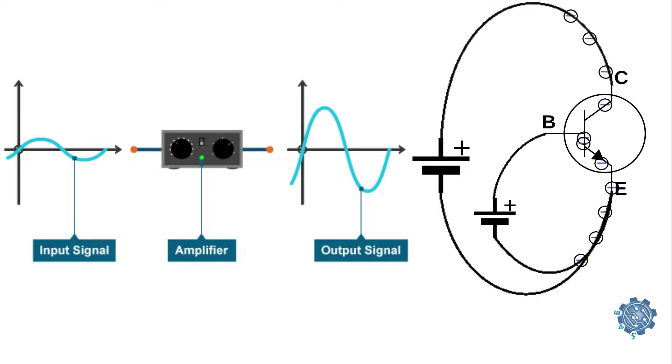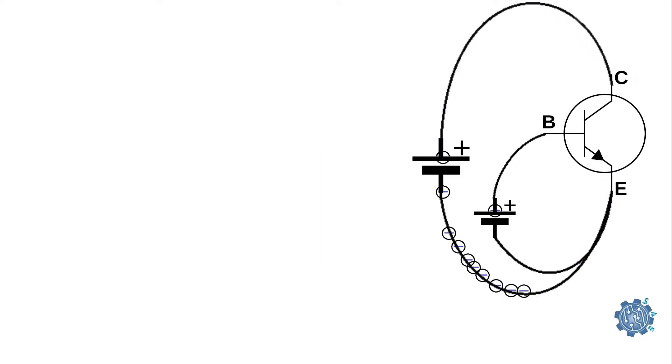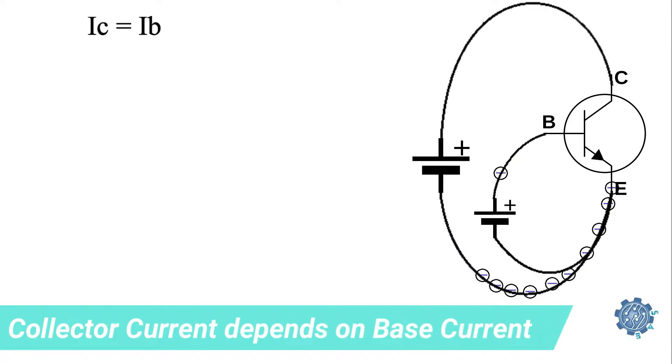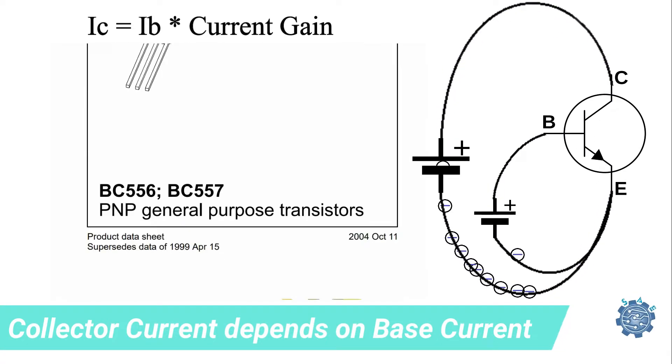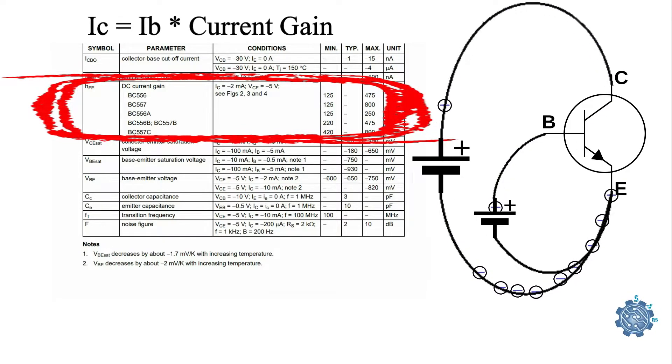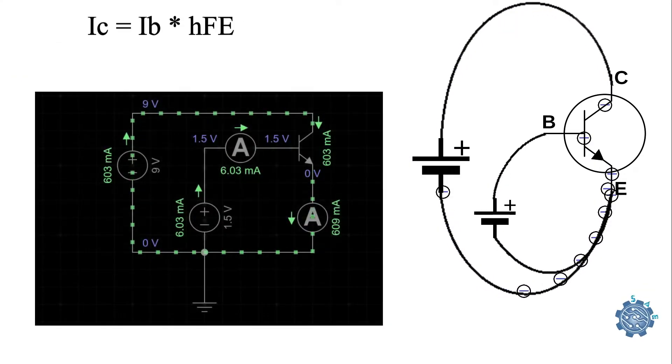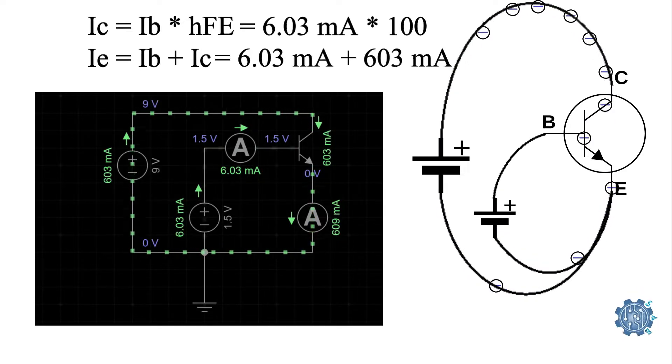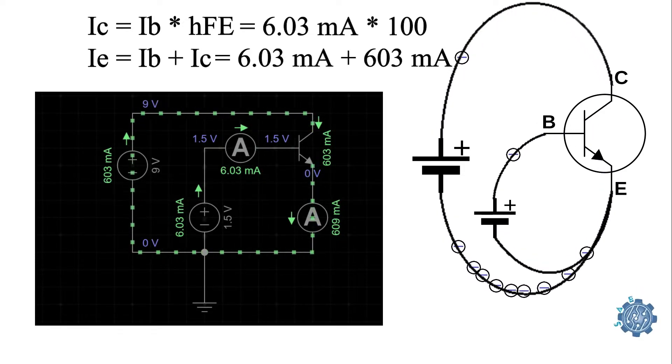The current flowing into the collector is proportional with the current flowing into the base. Usually, each transistor has a value of amplification specified in the manufacturer datasheet. The current from the emitter is equal with the current from the collector, summed up with the current from the base. As we can see, all the electrons from the emitter are flowing into the collector and base.